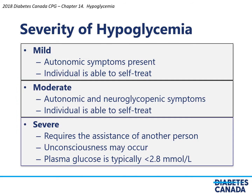The severity of hypoglycemia can be categorized as mild, moderate, or severe. Mild hypoglycemia is autonomic symptoms being present but the individual is still able to self-treat. In moderate hypoglycemia, autonomic and neuroglycopenic symptoms are present and the individual is still able to self-treat. However, severe hypoglycemia requires the assistance of another person, or involves unconsciousness, and typically the plasma glucose is much lower at less than 2.8.